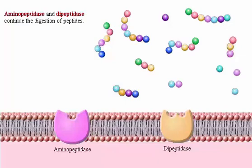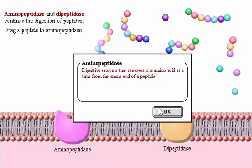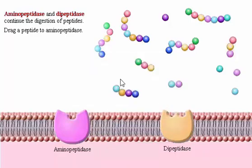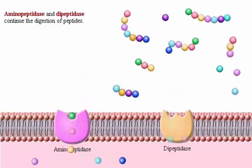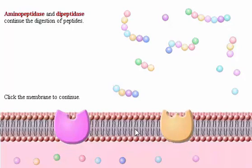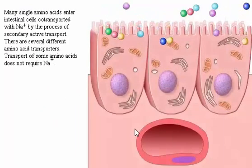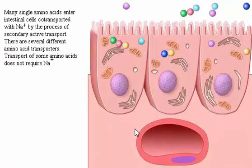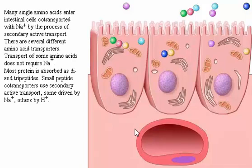Aminopeptidase and dipeptidase continue the digestion of peptides. Many single amino acids enter intestinal cells co-transported with sodium by the process of secondary active transport. There are several different amino acid transporters, and transport of some amino acids does not require sodium. Most proteins are absorbed as di- and tripeptides; small peptide co-transporters use secondary active transport, some driven by sodium, others by hydrogen ions.